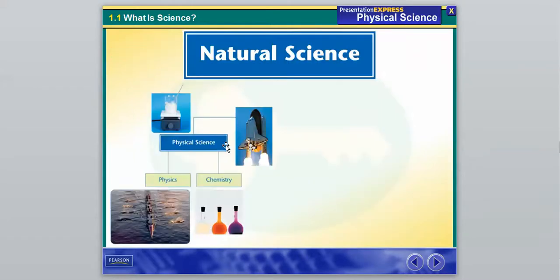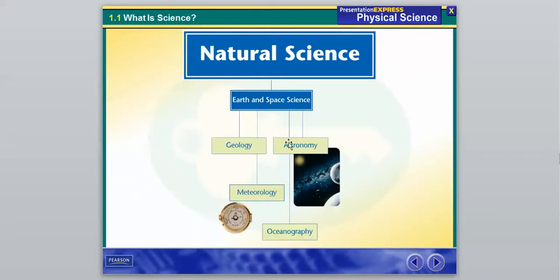So we have physical science, physics, and chemistry. This is going to be the main focus of our class, physics and chemistry, which we'll get to the definitions of those here in a second. And if we have time, we might even get to a little bit of earth and space science, because those apply some of the same concepts within physical science. So things like geology, astronomy, meteorology, and oceanography.